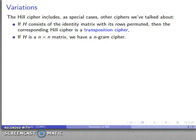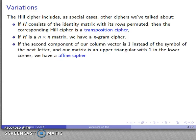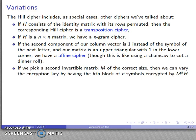If I take an n by n matrix, this is the fundamental feature of the Hill cipher, I get an n-gram cipher. If the second component of our column vector of our plaintext is 1 and the Hill cipher is an upper triangular matrix with lower entry 1, what I get is an affine cipher. Although this is kind of using a chainsaw to cut a dinner roll.